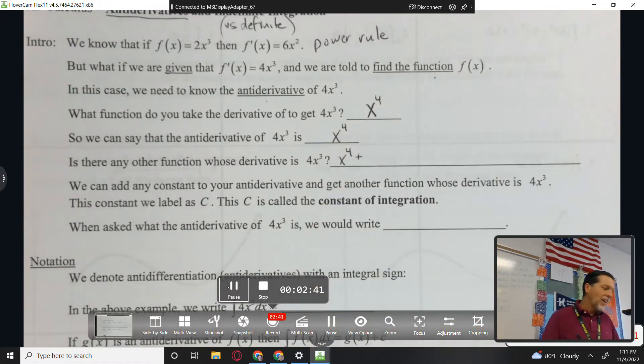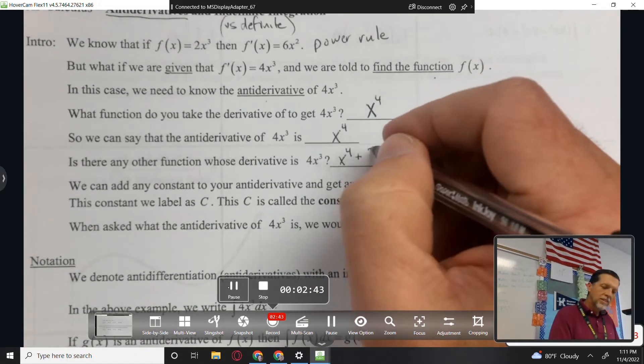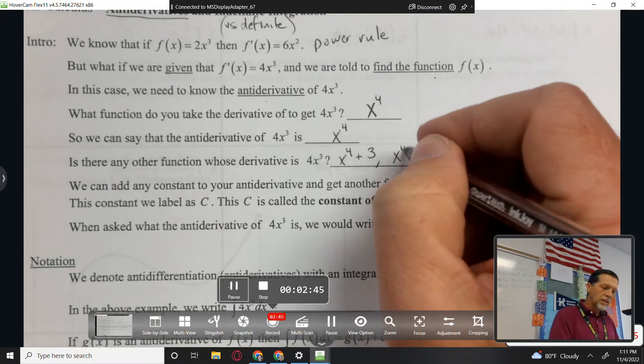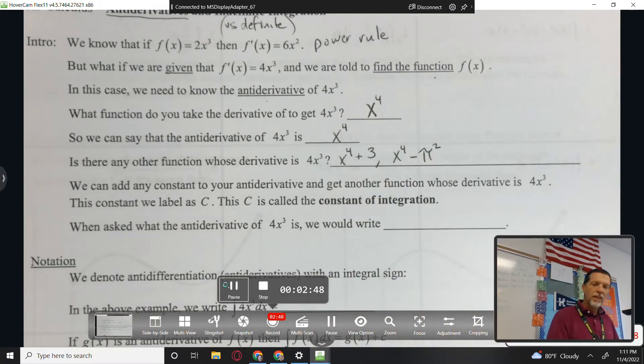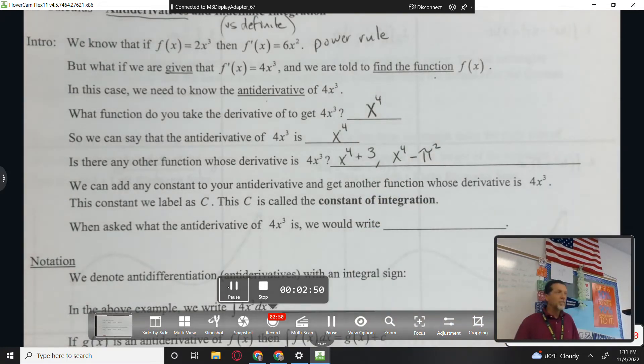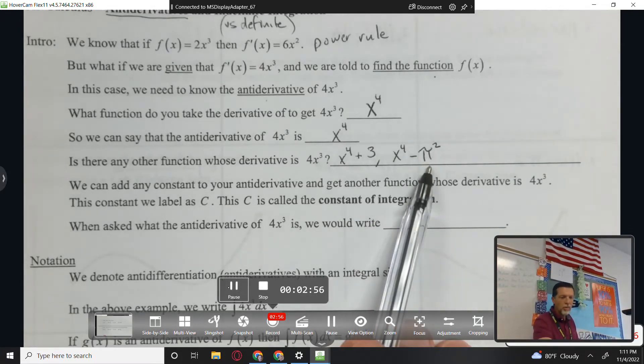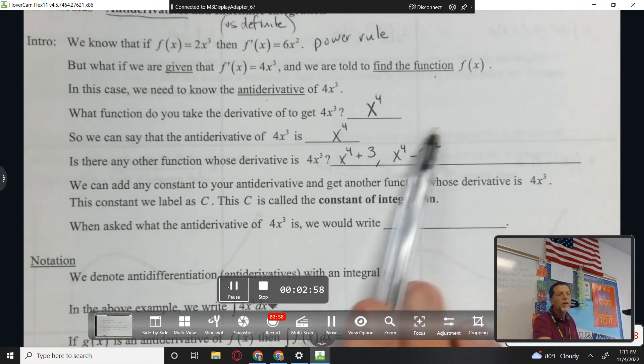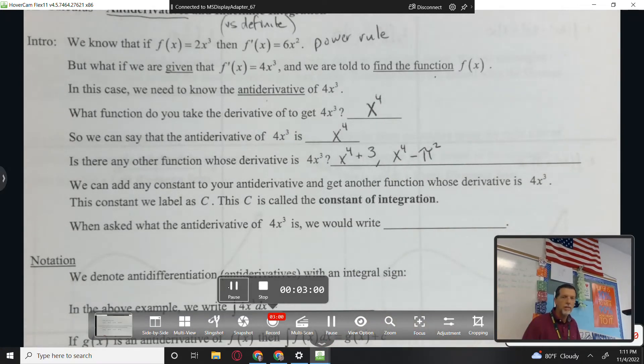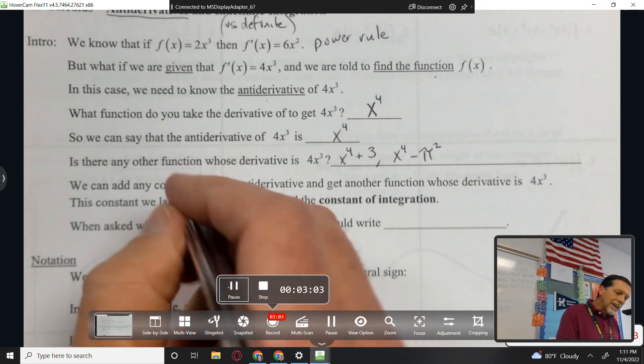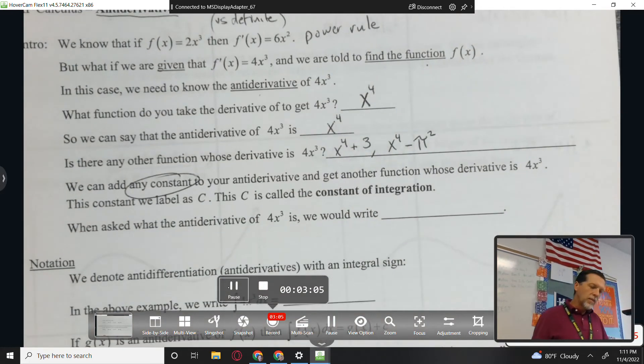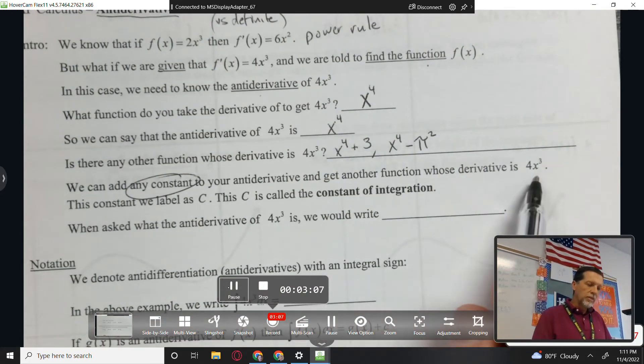That's exactly right, x to the fourth plus some number or minus some number. You can get creative and do like minus pi squared. Because if it's a constant, its derivative is zero. So the derivative of x to the fourth minus pi squared is 4x cubed, just 4x cubed.